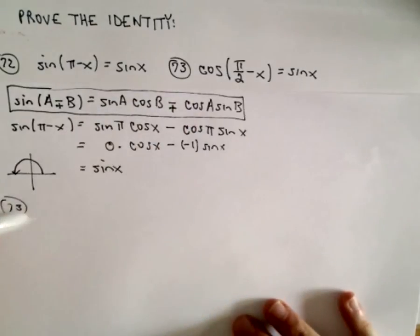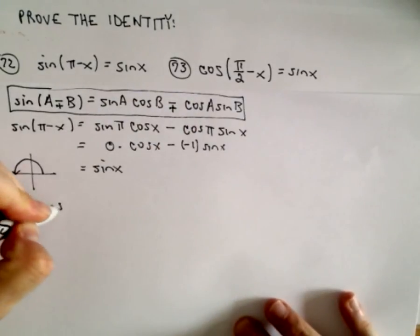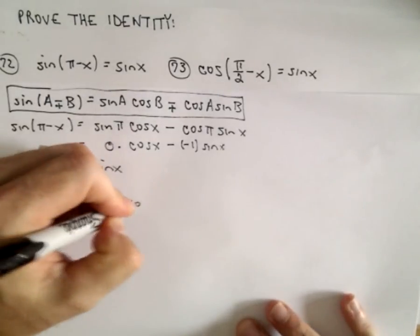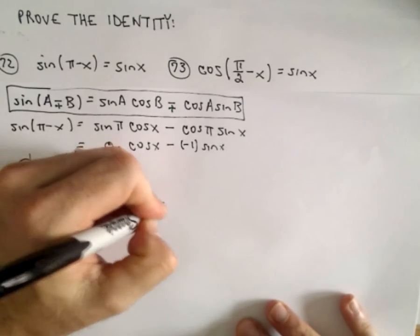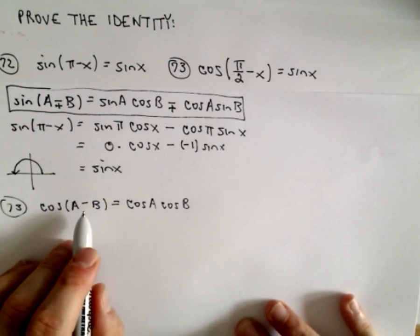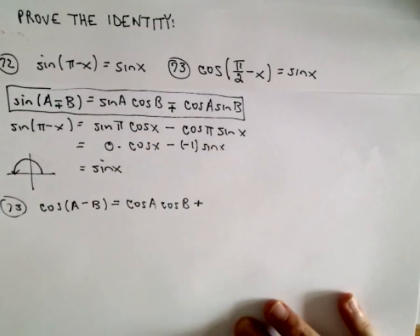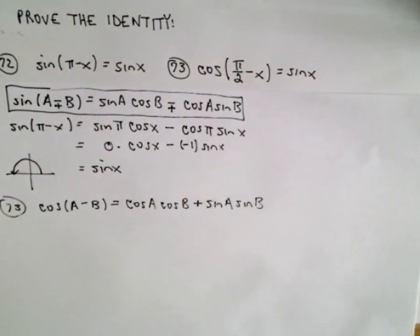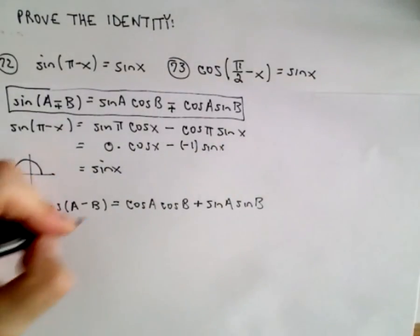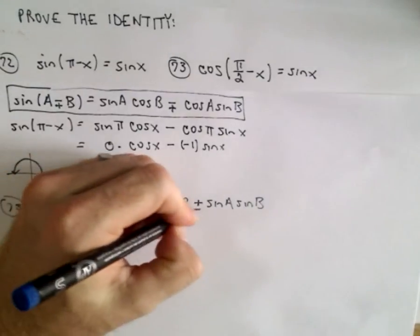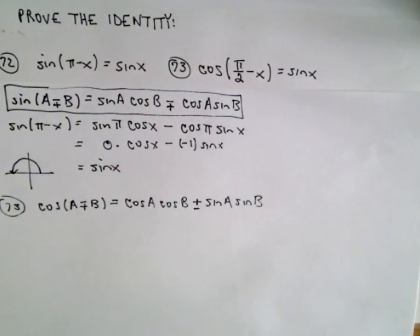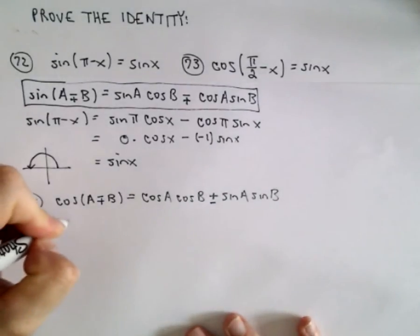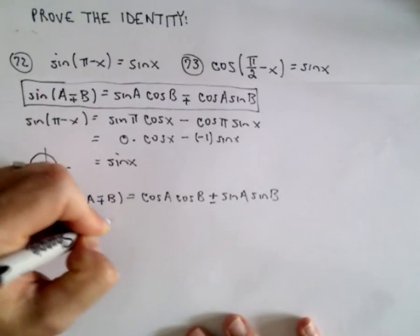So next we've got cos(π/2 - x). Well, the identity for cosine, if we have cos(A - B), for this one we have cos A times cos B, and even though we have a negative at the beginning, the sine now becomes positive, and then we have sin A and sin B. So likewise, if you started off with a plus sign between your A and B, you would end up with a minus sign on the right side.